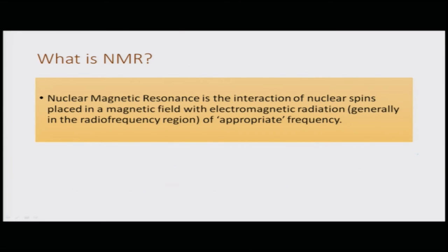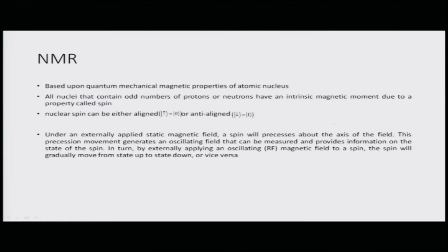NMR — nuclear magnetic resonance — is the interaction of nuclear spins placed in a magnetic field with electromagnetic radiation, generally in the radio frequency region of appropriate frequency. It is based upon quantum mechanical magnetic properties of atomic nuclei. All nuclei containing odd numbers of protons or neutrons have an intrinsic magnetic moment due to a property called spin.